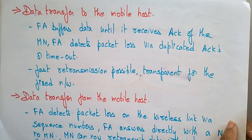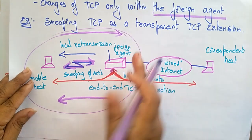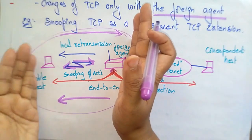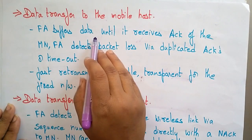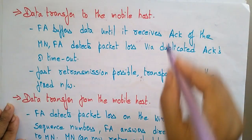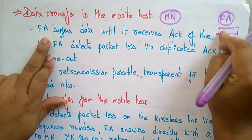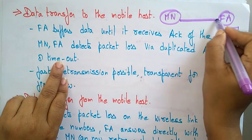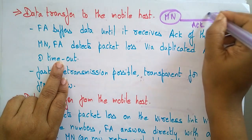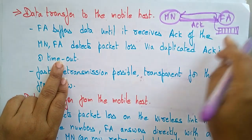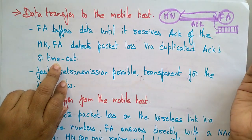Now let's see data transfer to the mobile host and from the mobile host. For data transfer to the mobile host, the foreign agent buffers data until it receives the acknowledgement from the mobile node. Until it receives the acknowledgement, it holds the data in the buffer, and once it receives the acknowledgement it transfers the next data from the buffer to the mobile node.